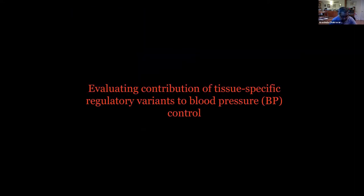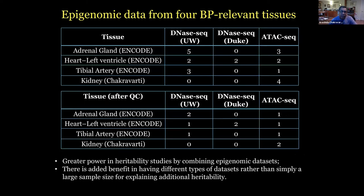In the last ten minutes or so I'll very quickly try to tell you where this kind of maps may lead with respect to blood pressure. We've recently done this analysis with Dongwon, looking at four blood pressure-relevant tissues. There are many tissues that contribute to blood pressure, which is why studying its genetics becomes complicated. We've taken data from ENCODE from the adrenal gland, the heart, the tibial artery, and the kidney.